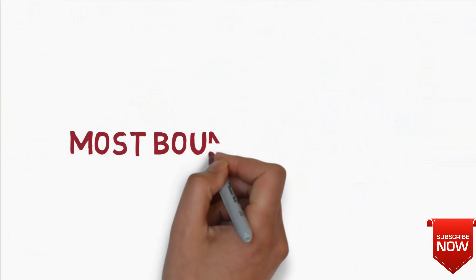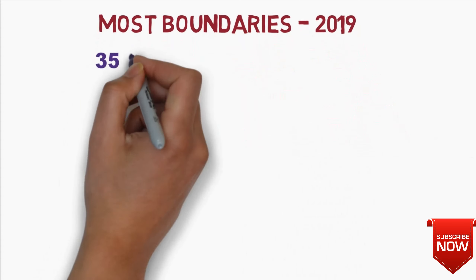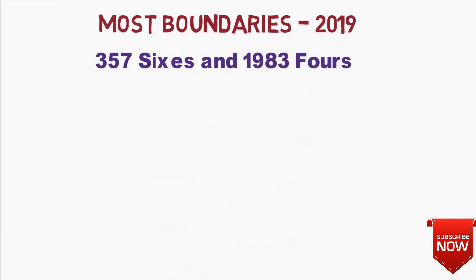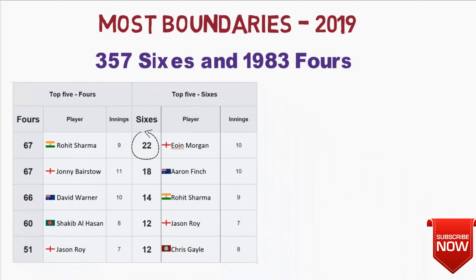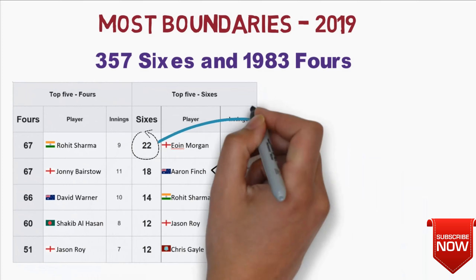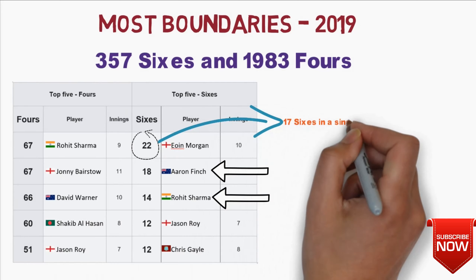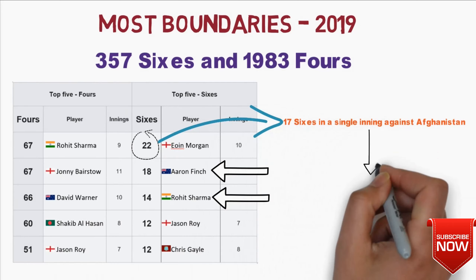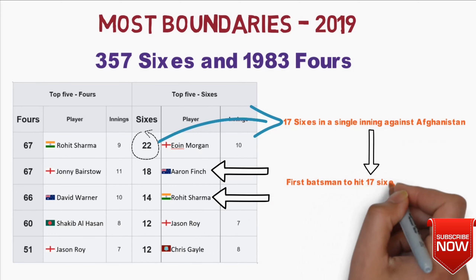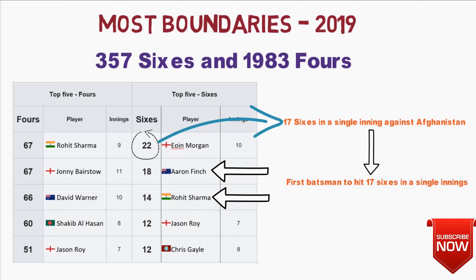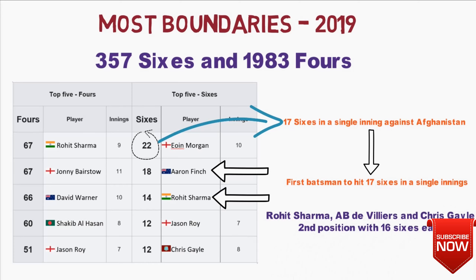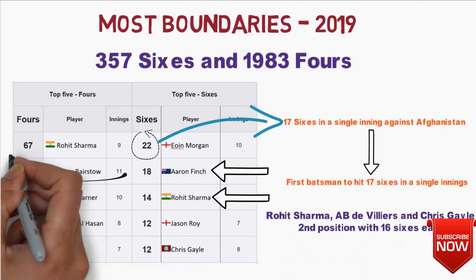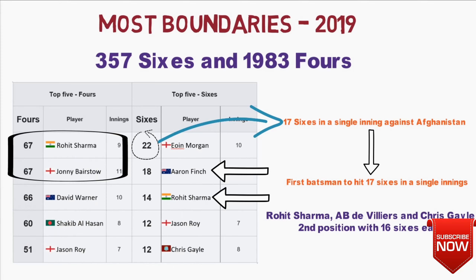The next category is Most Boundaries in the tournament. There were 357 sixes and 1983 fours hit in the entire tournament. Eoin Morgan is at the top of the sixes list with 22 sixes, followed by Finch and Rohit Sharma. Out of Morgan's 22 sixes, 17 came from a single innings against Afghanistan, making him the first batsman to hit 17 sixes in a single ODI innings in history. Rohit Sharma, AB de Villiers, and Chris Gayle together hold second position with 16 sixes. For fours, Rohit Sharma and Bairstow hold the top position with 67 fours, followed by David Warner with 66 fours.